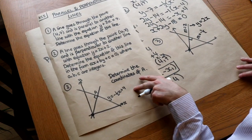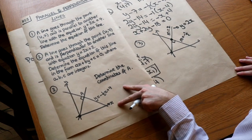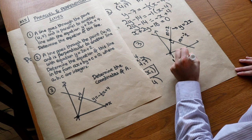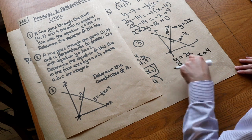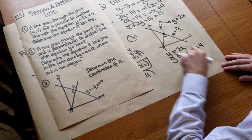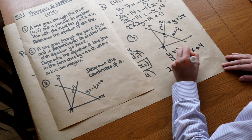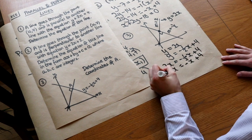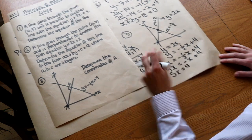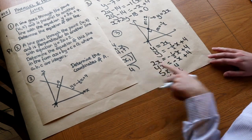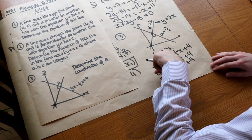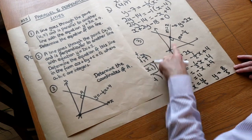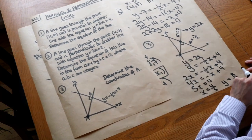To find the point of intersection, we solve simultaneously. One equation is y equals 2x and the other is y equals minus a half x plus 4. Equating the right-hand sides: 2x equals minus a half x plus 4. Doubling both sides to remove fractions, then adding the x term, we get 5x equals 8, so x equals four-fifths. Substituting back into y equals 2x gives y equals eight-fifths. So the coordinate of point A is (four-fifths, eight-fifths).